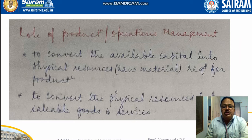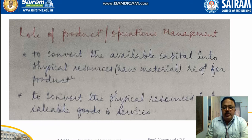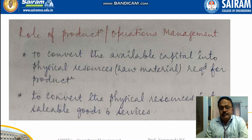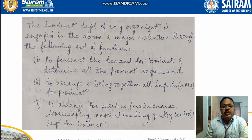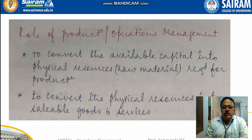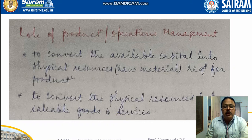The role of production or operations management is, first, to convert the available capital into the physical resources — that is, the raw materials required for production. Second, to convert those physical resources — men, materials, machines — into saleable goods and services. The production department is engaged in these two major activities: availing the raw materials and converting them into saleable goods and services.